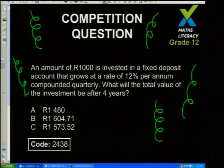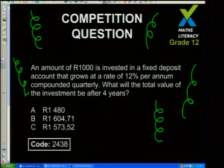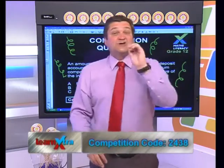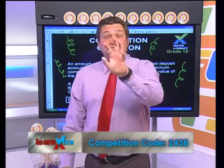Will it be A, R1,480? Will it be B, R1,604.71? Or will it be C, R1,573.52? Guys, you're in grade 12 — this shouldn't be a challenge at all for you. It's just called a competition question because there's no challenge in here. You've been doing things like this since grade 10, so this should be no problem. Get your answers to us.